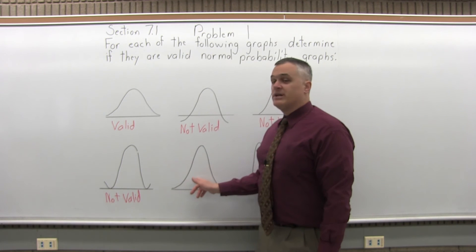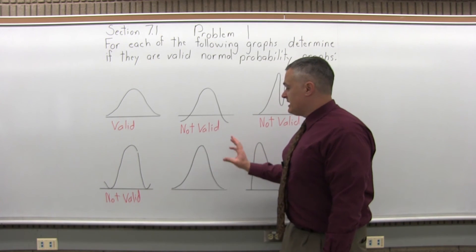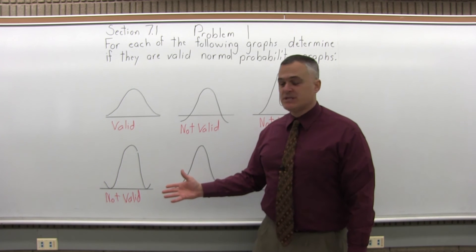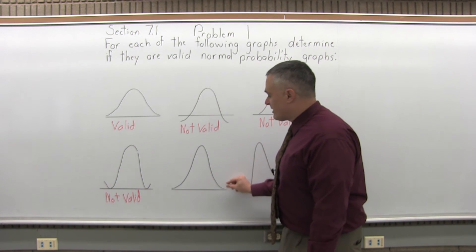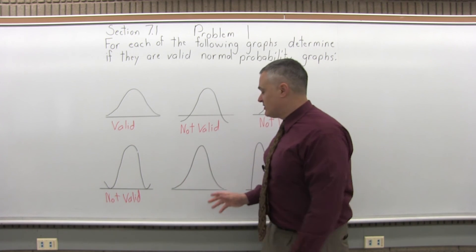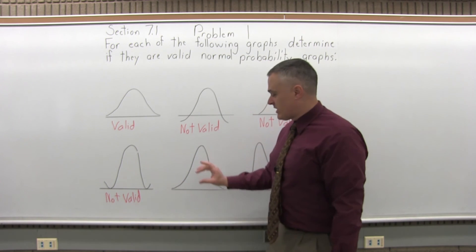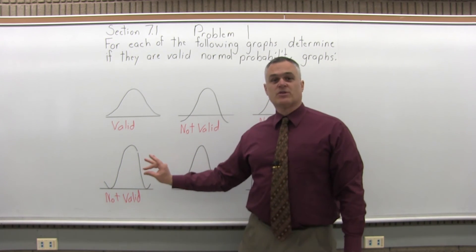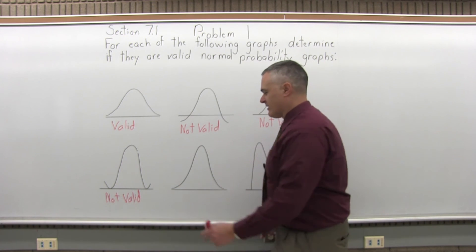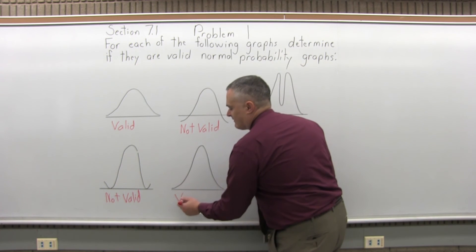Now the next one is valid. Everything is good. It's symmetric. It has that bell shape that it's supposed to have. The lines do come down and get close, but they don't touch. And again, you have to stop drawing them somewhere. But in reality, they continue forever in both directions, getting closer and closer to the horizontal line, but never quite getting there. So this one is valid.